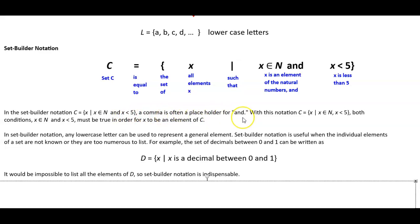A comma is often a placeholder for the word and. So with this notation, we can put a comma in there and that would represent and. So both conditions where x is an element of the natural numbers and x is less than 5 must be true in order for x to be an element of C.